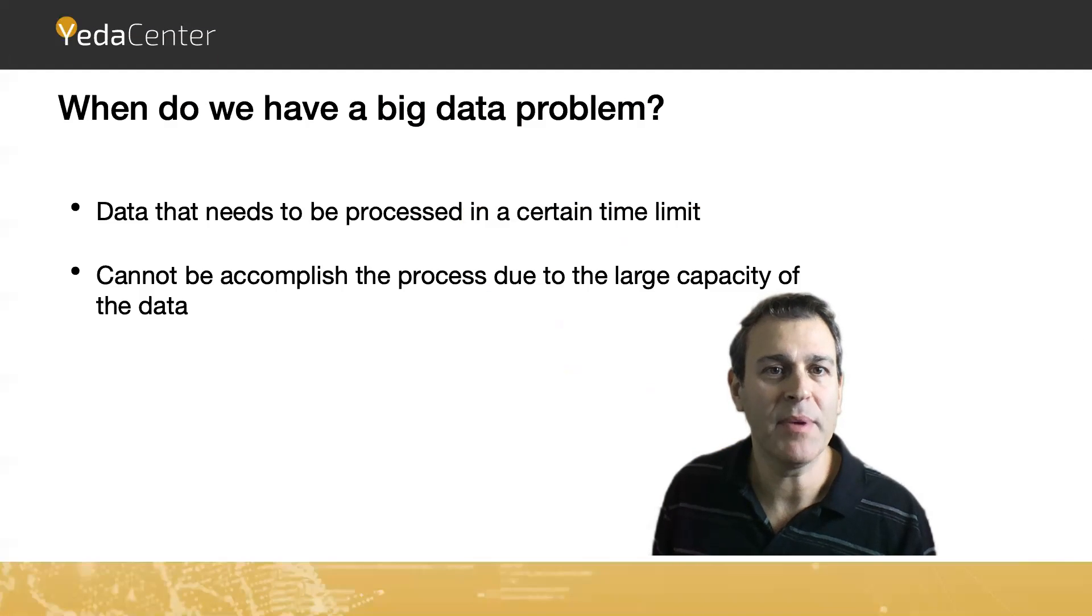So when do we have a big data problem? We need to process huge amounts of data in a reasonable time, and it cannot be processed on a single computer with a trivial processing model, even using multi-processing with multiple cores. We need to spread the data across many computers and process it across many computers into a single result.